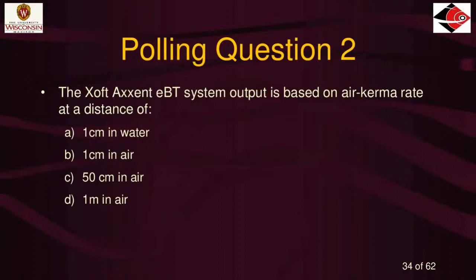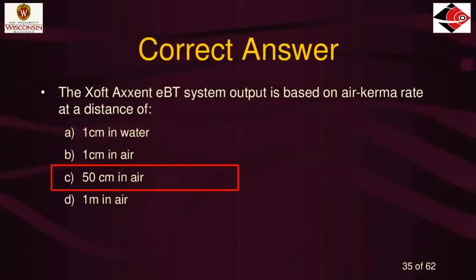This question is up and running in our poll section. The correct answer is C, 50 centimeters in air — that air kerma rate with a subscript of 50 centimeters. A couple of people answered one centimeter in water, which is a little tricky because that's where you finally end up: the dose rate at one centimeter in water. But the output is really based on the air kerma rate at a distance of 50 centimeters in air.